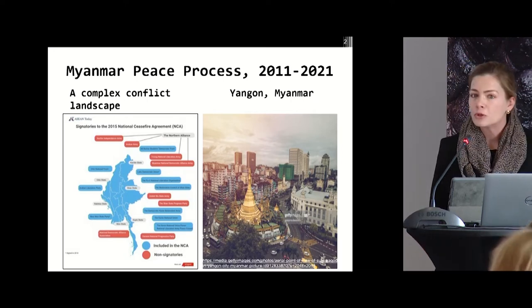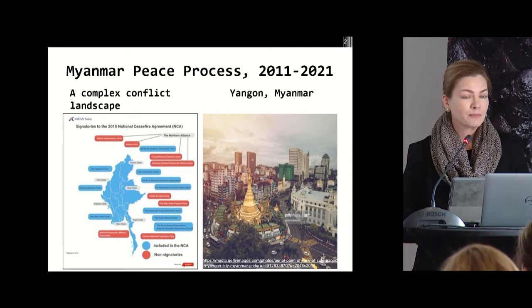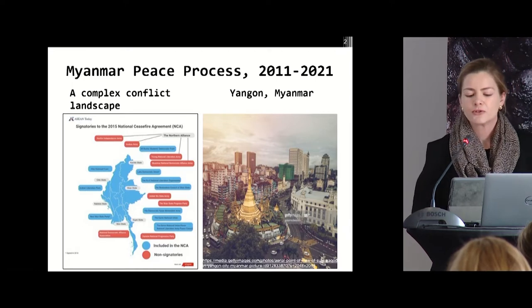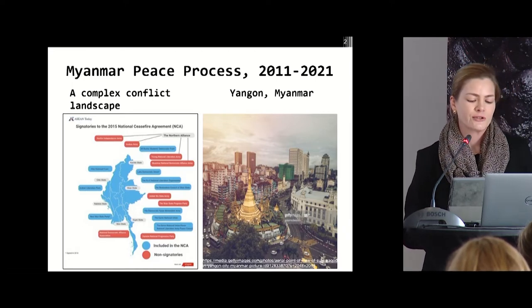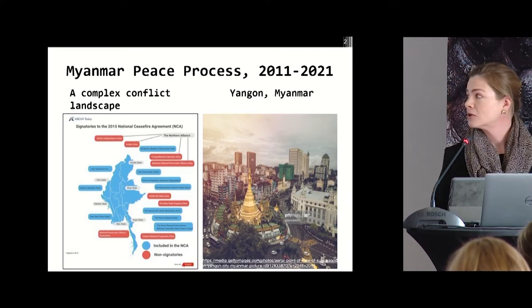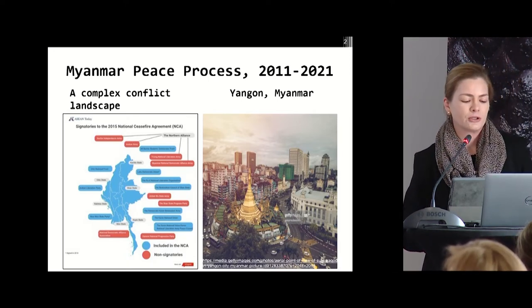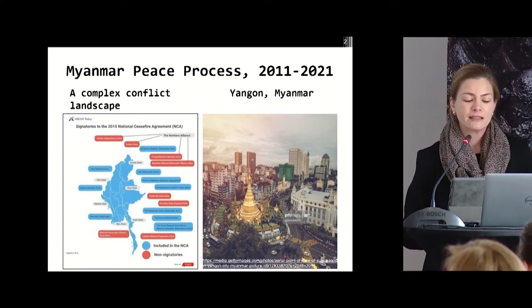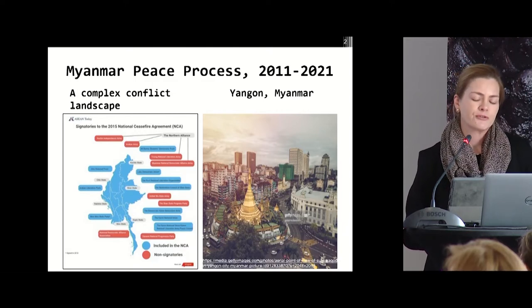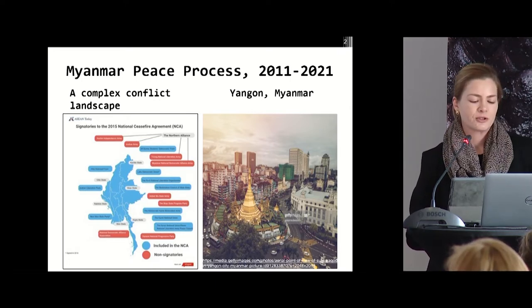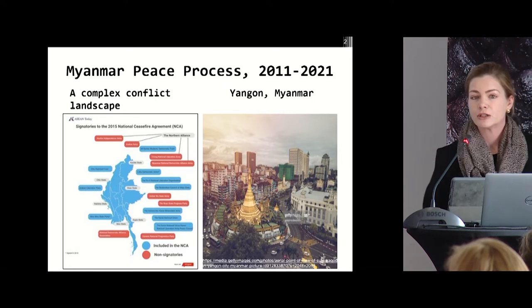Unfortunately, as we know, Myanmar's peace process failed. It ended abruptly with the military coup in February, and international support for local civilian protection and peace-building did not lead to peace. However, the case of Myanmar does offer important lessons about the potential and limitations of civilian monitoring to improve protection of civilians in remote and difficult-to-access conflict zones where international actors could not directly intervene.